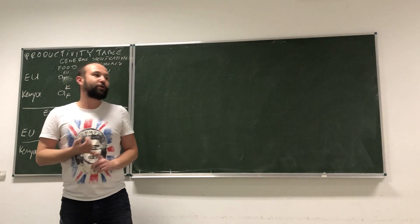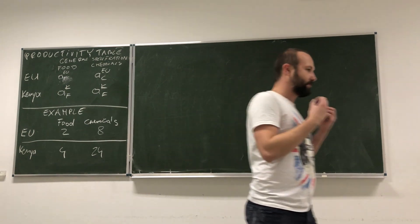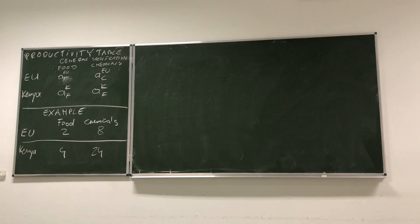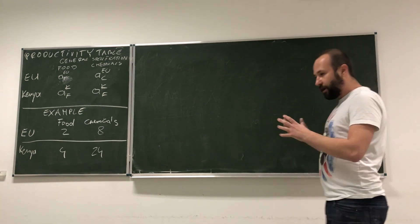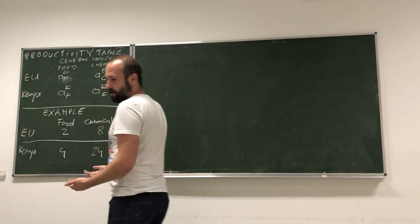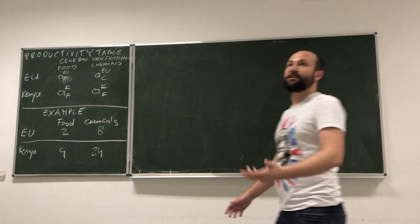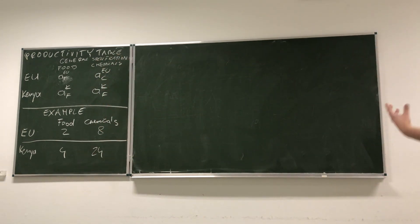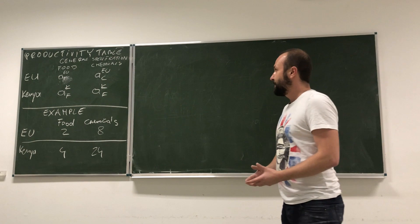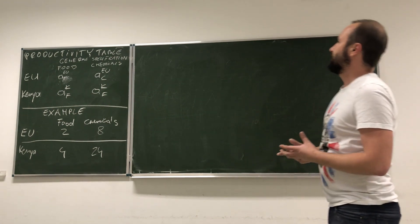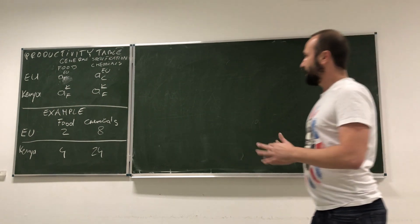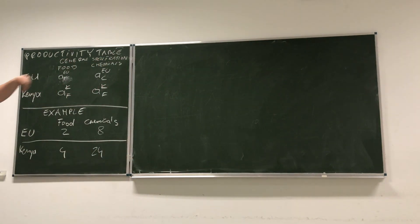So, look, now that we've outlined and described all the assumptions of the model, we can now start to think about those differences in technology that are supposed to be driving trade between countries. Those differences in technology are described by something we would call productivity. Anyway, here we have one general specification and one example.